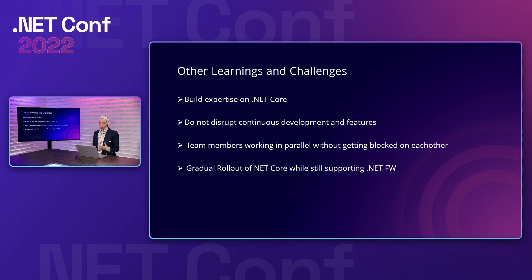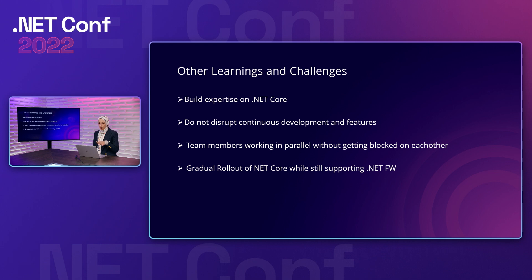We did not want to disrupt continuous development, as these are very active services with hundreds of PRs checked in every month. To avoid blockers, we made all changes in the master branch and relied heavily on preprocessor directives to differentiate .NET Core versus .NET Framework code paths. Service owners did a good job ensuring all new features supported both .NET Framework and .NET Core simultaneously.